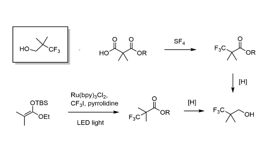It's worth considering how the trifluoromethylated alcohol was made. A classical approach would be to treat a dimethyl malonate half-ester with sulfur tetrafluoride (SF4), which would selectively deoxyfluorinate the unprotected carboxylate to afford the trifluoromethyl group. However, SF4 is a horrendously reactive gaseous reagent — it releases SO2 and hydrofluoric acid on exposure to moisture, and it's really only used when absolutely necessary.